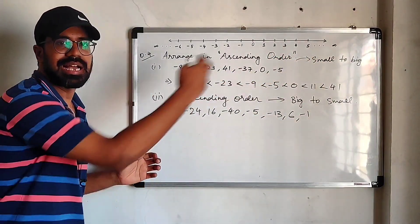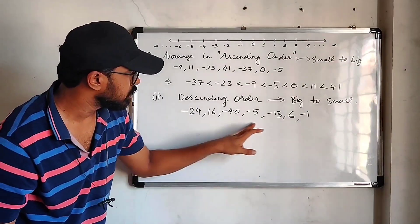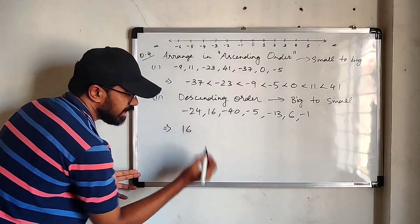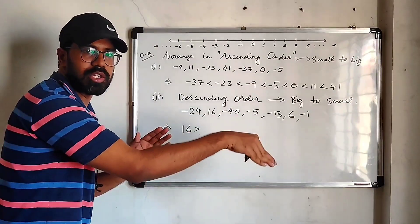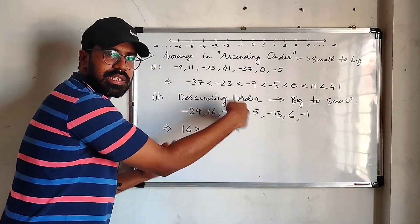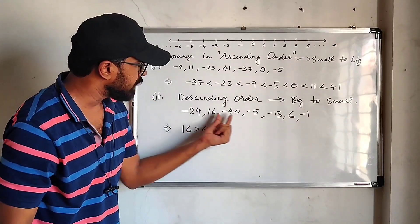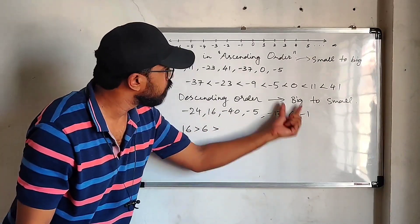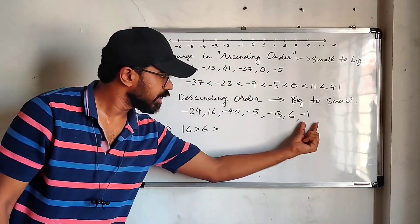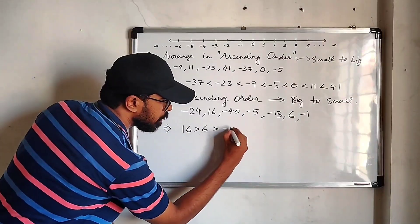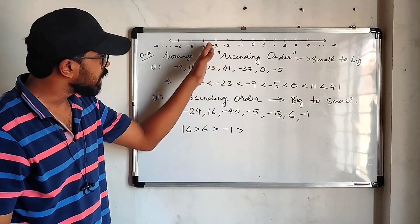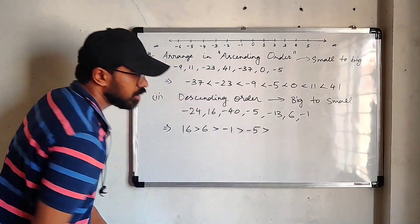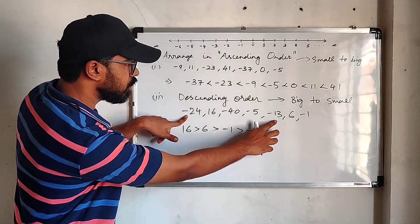The positive numbers we have are 16 and 6. The highest is 16, so we write 16 first. Then 16 is greater than 6, which is the next smaller positive number. We do not have 0, so after 6 we move to negative integers. The next one is minus 1, then going further left we have minus 5, then minus 13. After minus 13, the remaining numbers are minus 24 and minus 40.